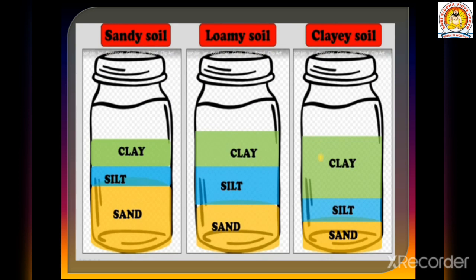Here you can see the picture of sandy soil, in which the proportion of sand is generally greater than silt and clay. In loamy soil, the proportions of clay, silt, and sand are almost the same. In clayey soil, the proportion of clay is very high rather than silt and sand.